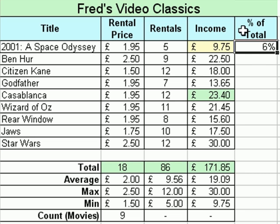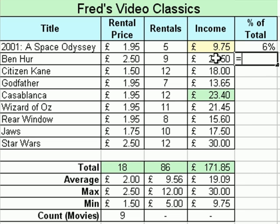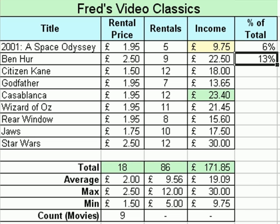I'll just run through that one more time. Click into E4 — this time we'll find out what percentage of total sales Ben-Hur is making up. So equals to start, click on the sales value for Ben-Hur, £22.50, divide on the keyboard, click on the total value, click the tick. Again we get a decimal value, but click the percentage button to apply the formatting, and we can see that Ben-Hur is 13% of our total sales.